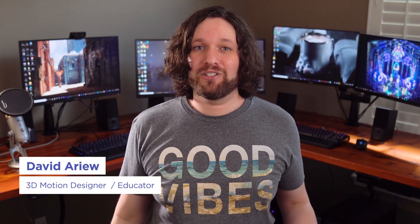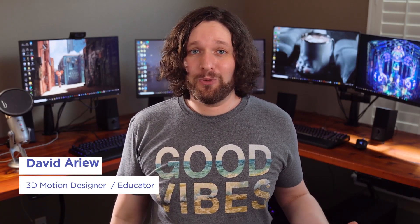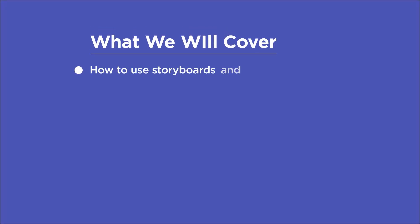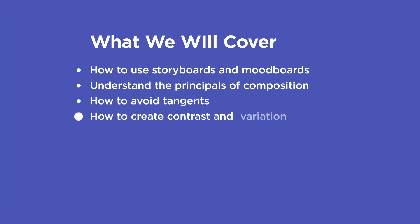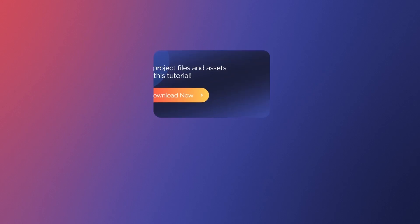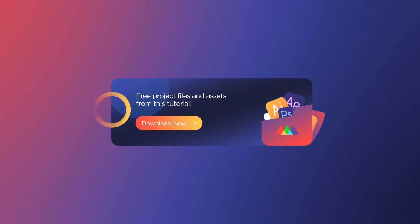I'm David Aryev, and I'm a 3D motion designer and educator, and I'm going to help you make your renders better. In this video, you'll learn how to use storyboards and mood boards to lay the foundation for your renders, understand the principles of composition such as the rule of thirds, the phi grid, and the golden ratio spiral, avoid tangents in your renders, and how to create contrast and variation to bring your composition to life. If you want more ideas to improve your renders, make sure to grab our PDF of 10 tips in the description. Now let's get started.